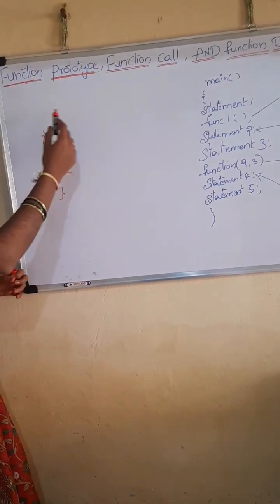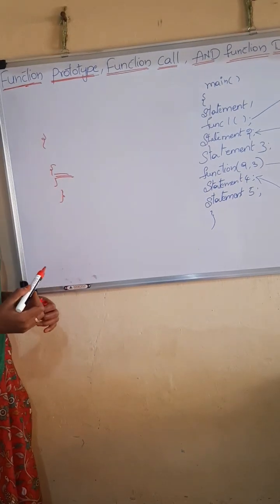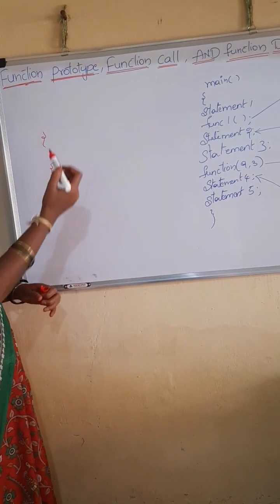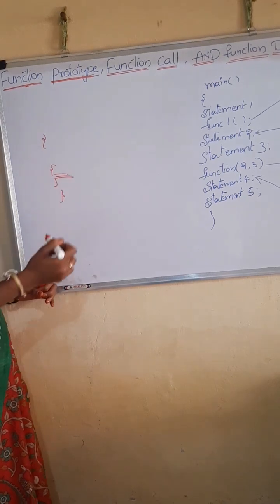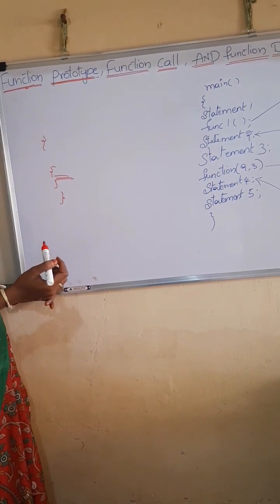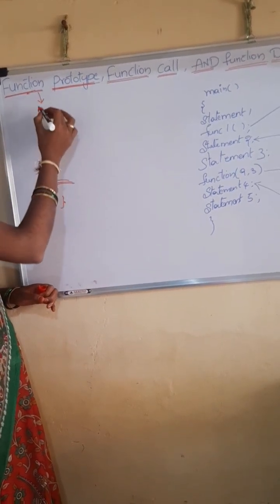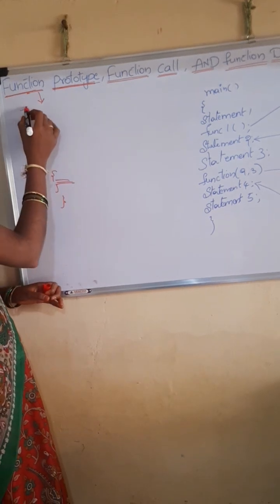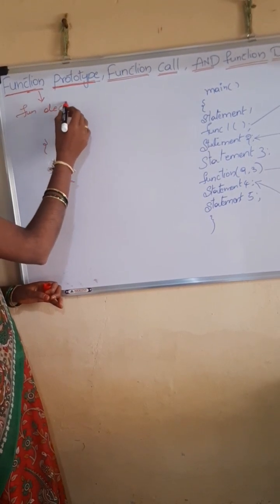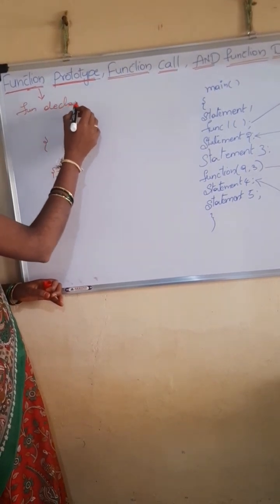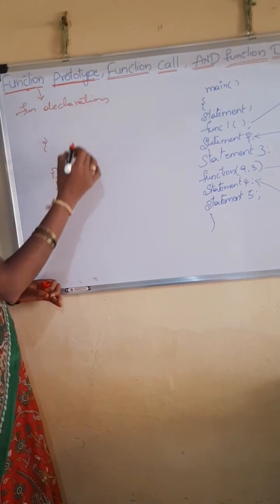There are three types: function prototype, function call, and function definition. Now we will see function prototype. Function prototype is also known as the function declaration.